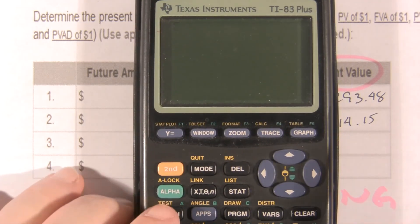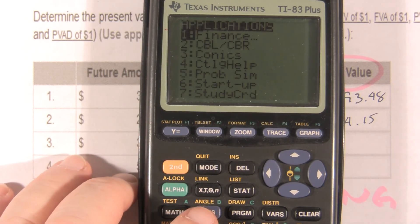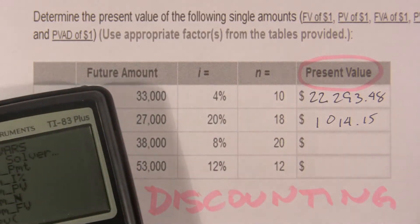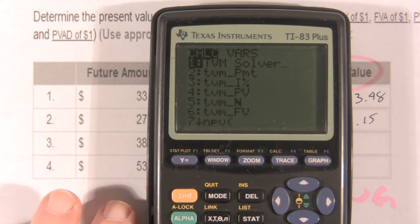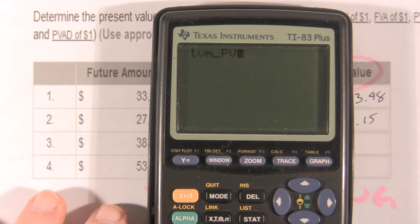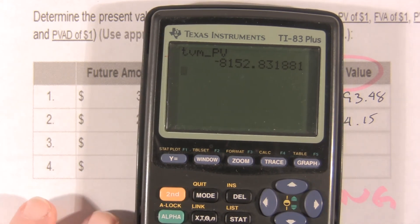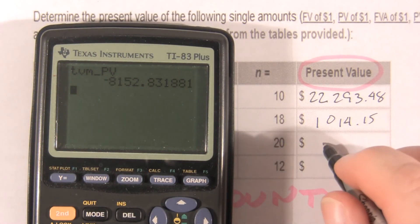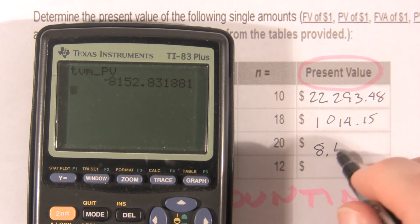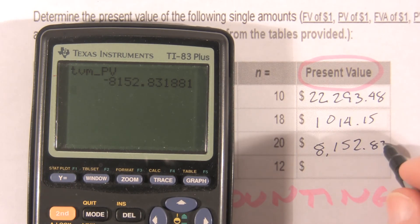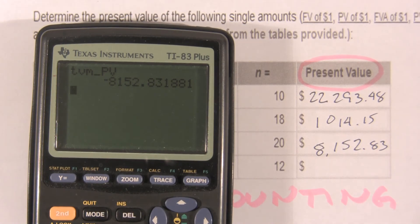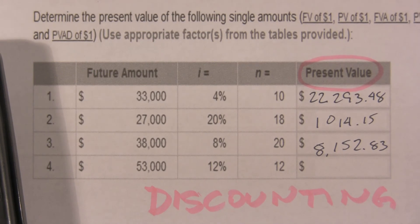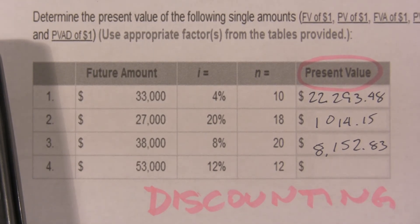That's the information we need. Second mode, quit, apps, finance. And now we're looking for the present value. So, that's option number 4. Enter. $8,152.83. $8,152.83. Today is the same amount of money as $38,000 20 years from today at 8%.